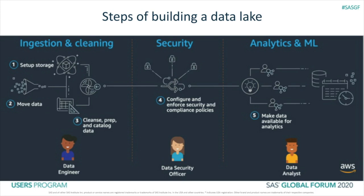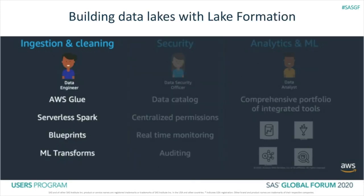Last year, AWS launched Lake Formation, which allows users to set up data lakes in a matter of weeks. It provides the three pillars of setting up a data lake: ingestion and cleaning, security, analytics, and ML. Within ingestion and cleaning, the building block is AWS Glue, which provides a framework to write the workflows of moving data from source to destination using serverless Spark.